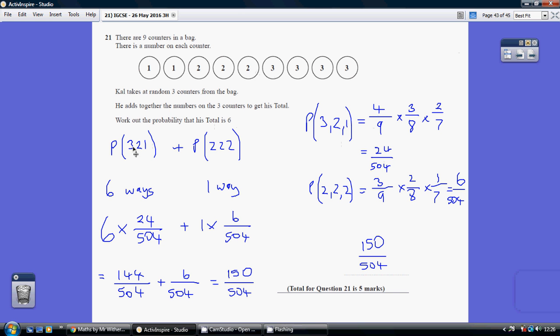Now there are 6 possible combinations of 3, 2, 1. OK, there's 3, 2, 1, 3, 1, 2, 1, 2, 3, 1, 3, 2, 2, 1, 3, 2, 3, 1. Six ways of doing it.